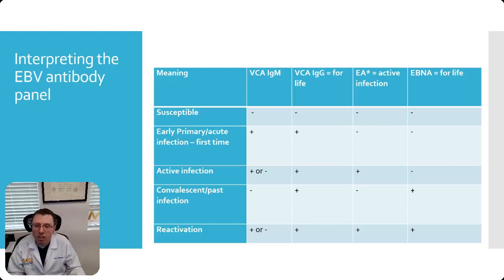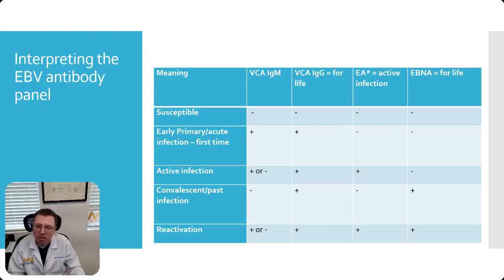If you had a past infection, you would have a positive IgG for the VCA and EBNA. EBNA is a late marker — once you've recovered, this is the one that becomes positive. So how do you know if it's a first-time infection versus reactivation? EBNA will be positive with reactivation but won't be positive with a first-time infection. With reactivation, you may see IgM again from the VCA and everything else will be positive — that's how we can tell it's a reactivation.